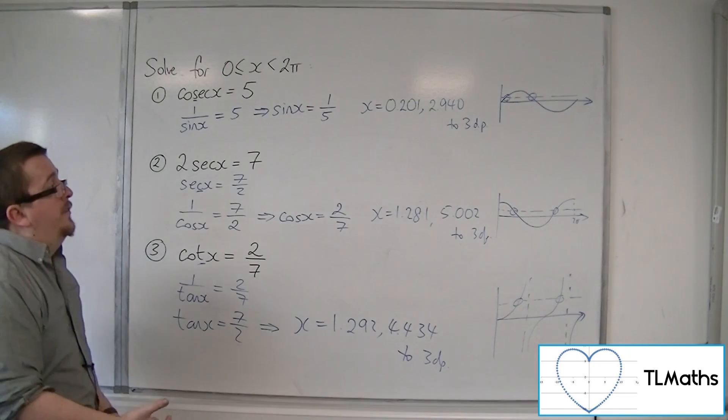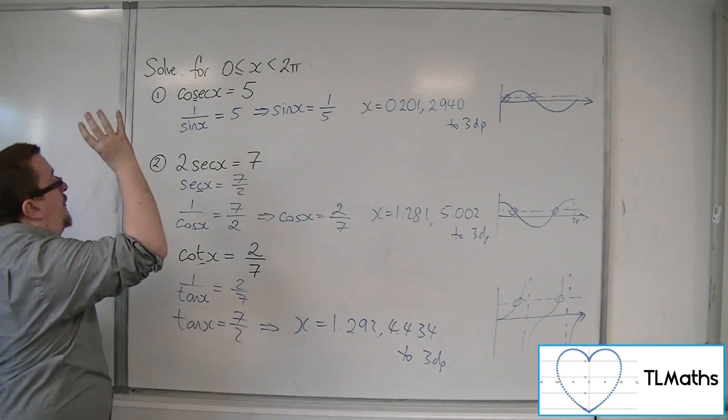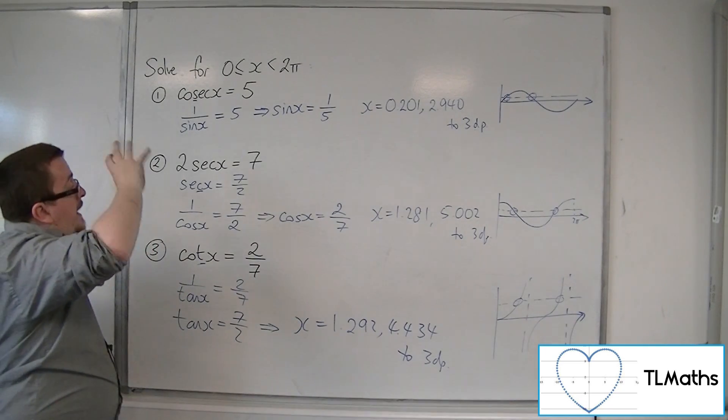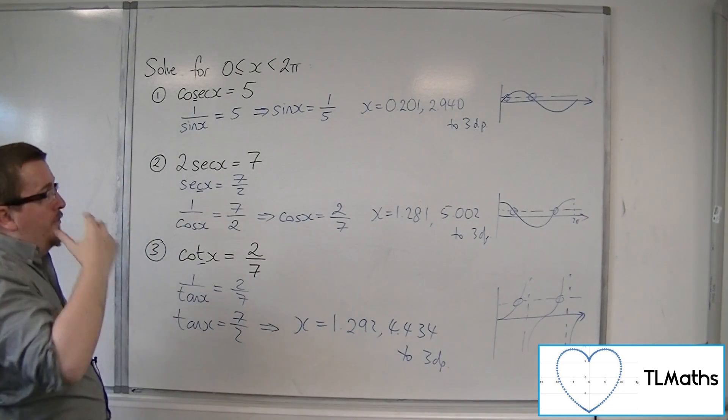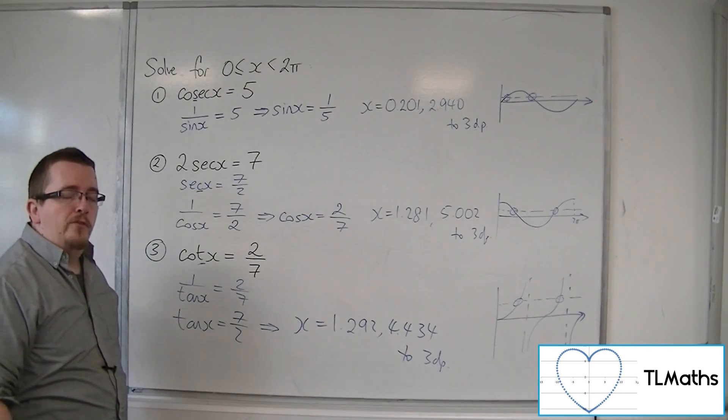And that's how we can solve basic trig equations involving cosec, sec and cot. In all three cases we convert to an equation involving sine, cosine or tan, and solve them there.